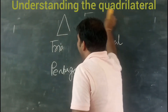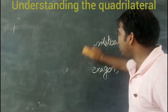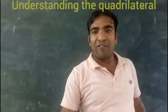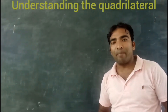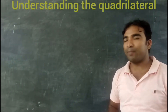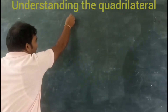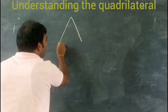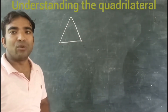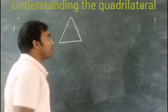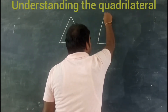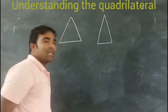Now, on the basis of the measurement of the sides, we can also classify the polygon into two different types. When a polygon is made up of all equal sides — that is, the measurements of all the sides are equal — it is known as a regular polygon. When a polygon is made up of sides with different measurements, it is known as an irregular polygon.